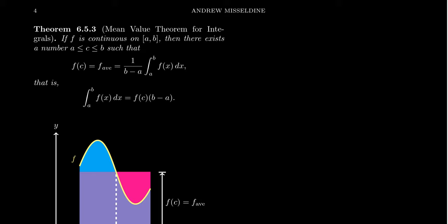A similar question actually applies in the following context: is there a value of x for which the function obtains its average value? For a continuous function, the answer is going to be yes. So what we want to do is restate the mean value theorem not for derivatives but for integrals. If f is a continuous function on the interval a to b, then there exists some number c between a and b such that the average value equals f of c — the function obtains its average value at some location.